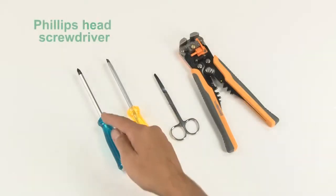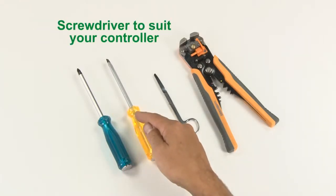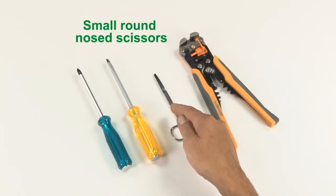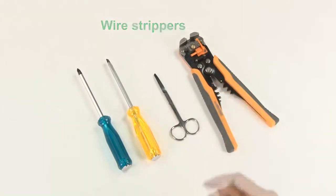You will also need tools including a Phillips head screwdriver to secure the lid screws, a screwdriver to suit the screws in your controller, a pair of small round nose scissors for peeling back the outer cover of your cable, and some wire strippers for preparing the ends of your wires.